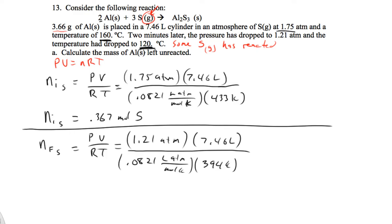And then our temperature drops to 393 K. That's adding the 120 to 273. So now our final moles of sulfur is going to equal 0.280 moles.